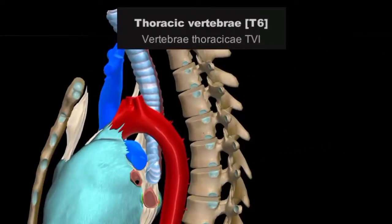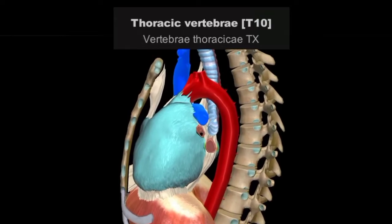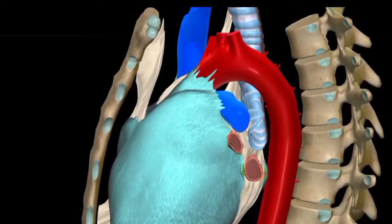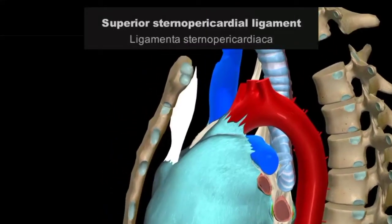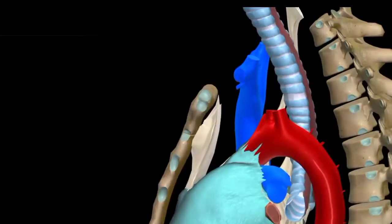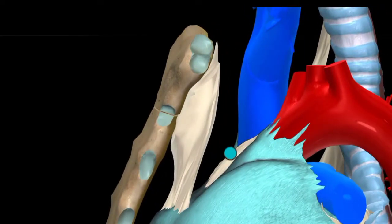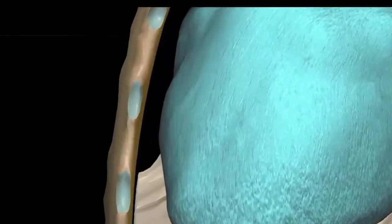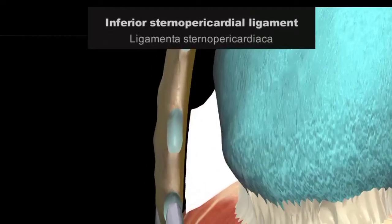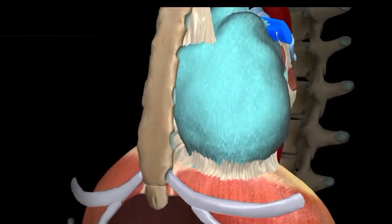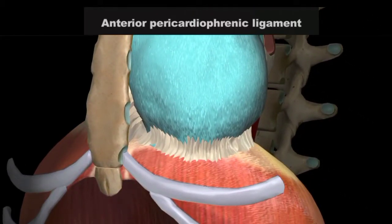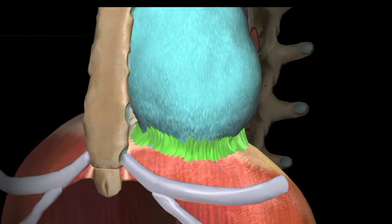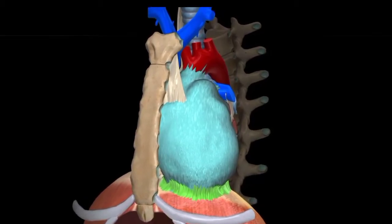Pericardium is attached to the body of sternum by the inferior sternopericardial ligament. Pericardium is also attached to the diaphragm by the inferior pericardio-phrenic ligament, through which the pericardium attaches to the diaphragm.